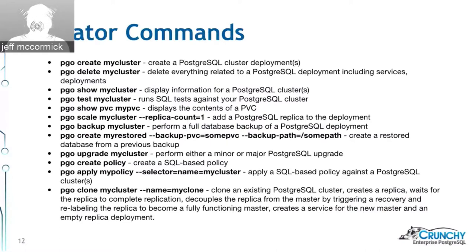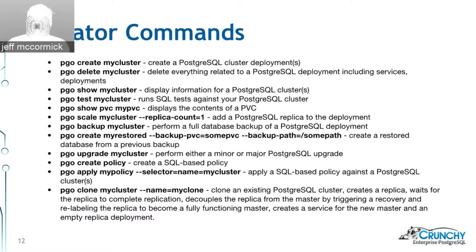`pgo show` displays cluster information. `pgo test` runs a simple SQL query test against the Postgres cluster and prints out the equivalent psql commands — useful for people who want to manually connect and test cluster connectivity. `pgo show pvc` displays the contents of a PVC; Postgres stores its data on a dedicated persistent volume claim, and this is a simple way to do an ls-style view of the contents of that PVC.